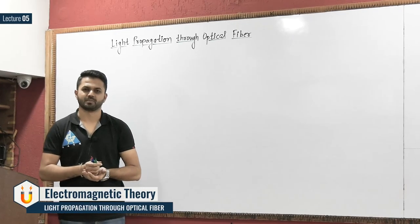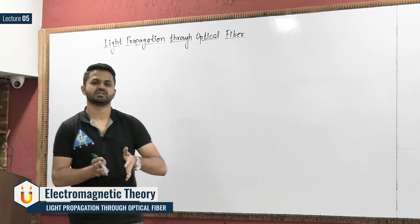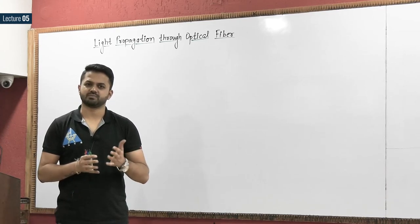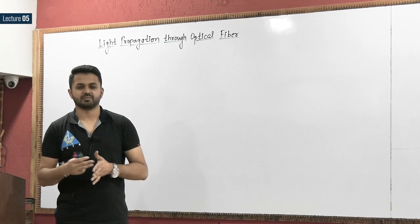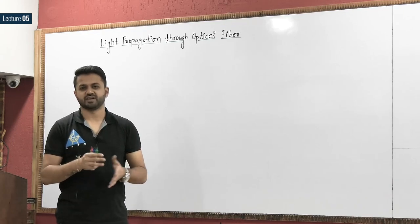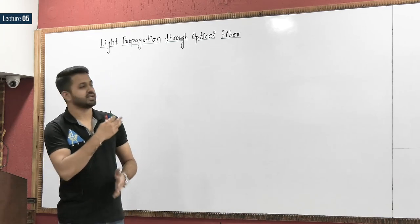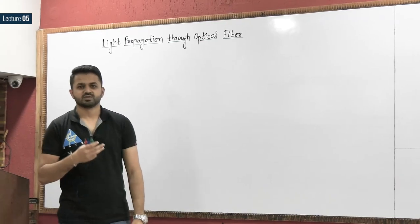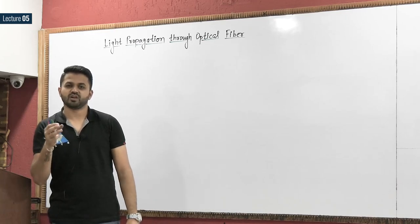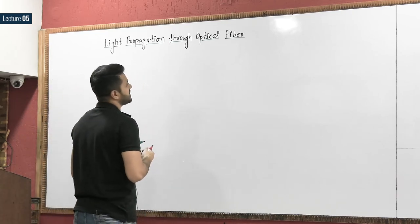Our next topic is light propagation through optical fiber. The parameters we need to consider include numerical aperture, acceptance angle, types of optical fiber, how the number of modes can be defined, and how we can define the cutoff wavelength. In light propagation, optical fiber is used to carry the light, so first we have to consider the structure of optical fiber.